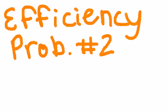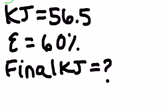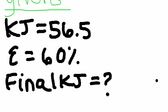Efficiency, problem number two. First off we're going to make our list of givens in the top left corner. So we have kilojoules which is 56.5, our efficiency is 60%, and we need to look for the final kilojoules.